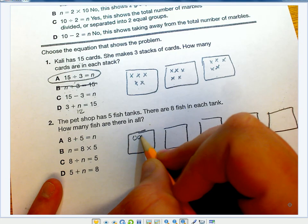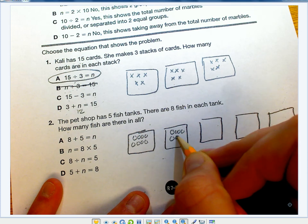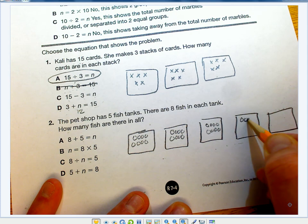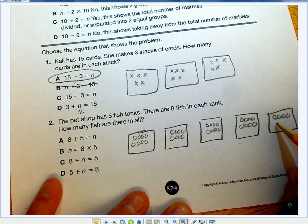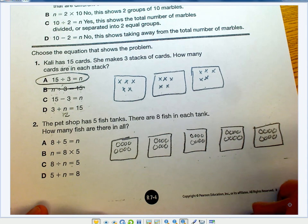And 8 fishies in each, 1, 2, 3, 4, 5, 6, 7, 8. So I have my 5 tanks and 8 fish in each tank.